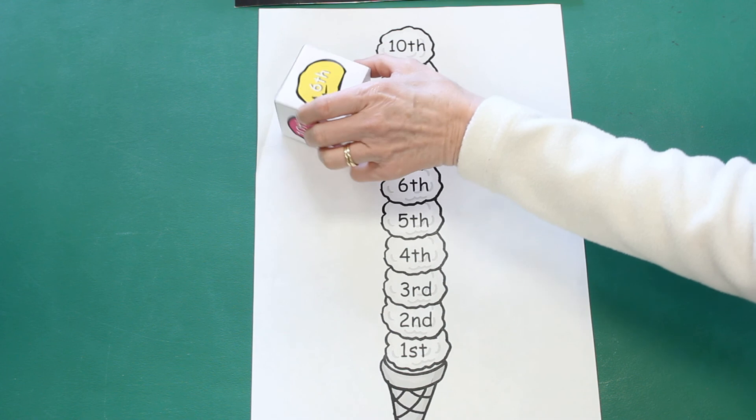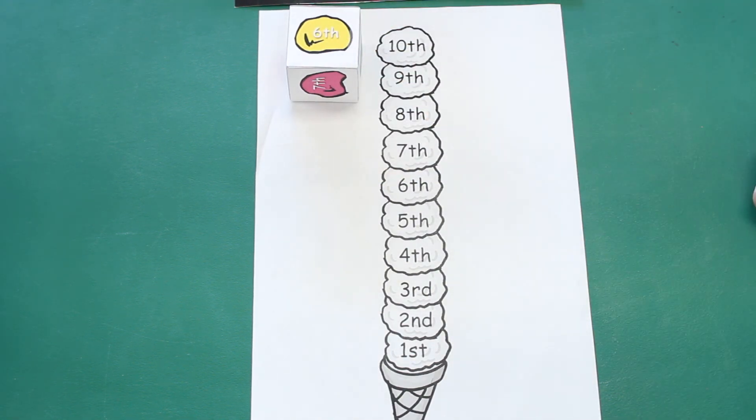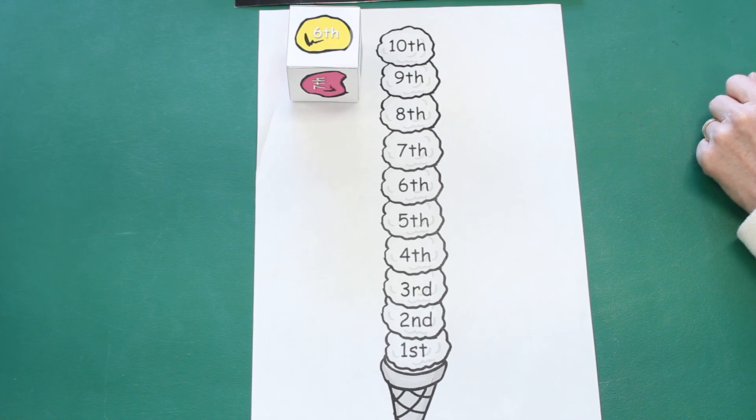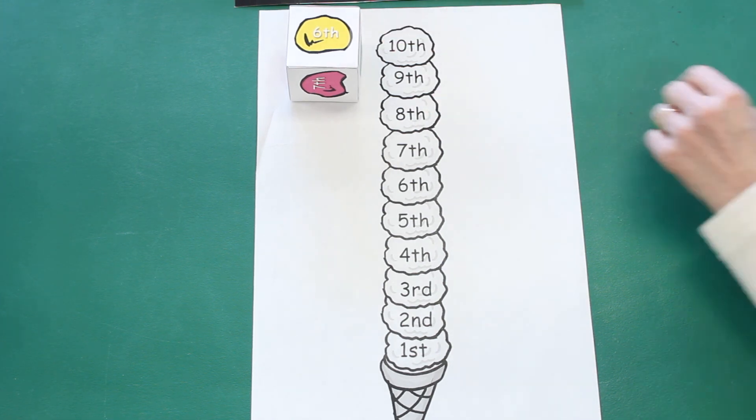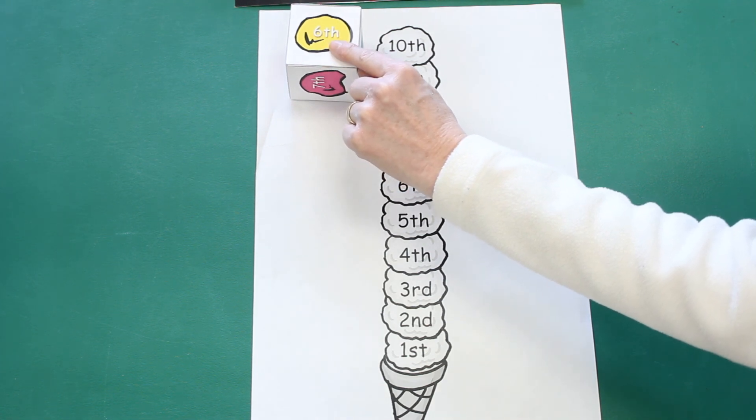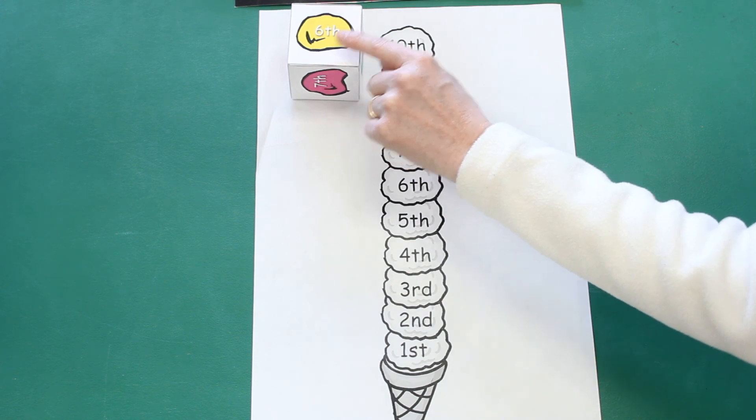All right, you have a dice in your Thrilling Thursday packet. It might be in your supplemental blue folder. Will you pull that dice out? That goes with the ice cream scoop paper. And we're going to play a little game. You can play this with your mom or your dad or you could just play it by yourself. But you're going to roll the dice and you're going to find the scoop on the top of the dice. You're going to look for that scoop on your paper and you're going to color it that color.